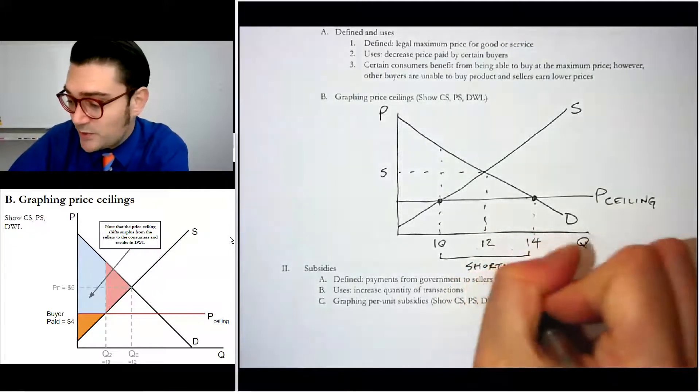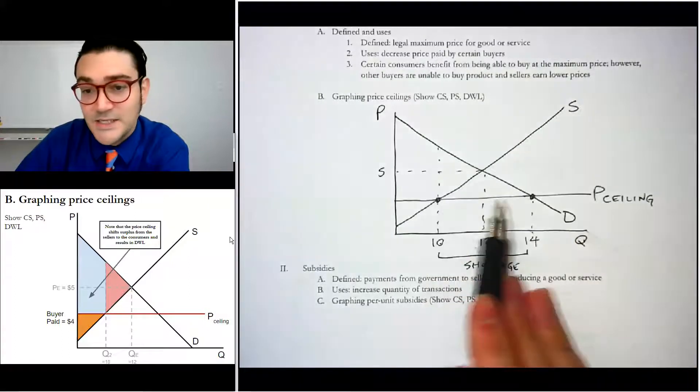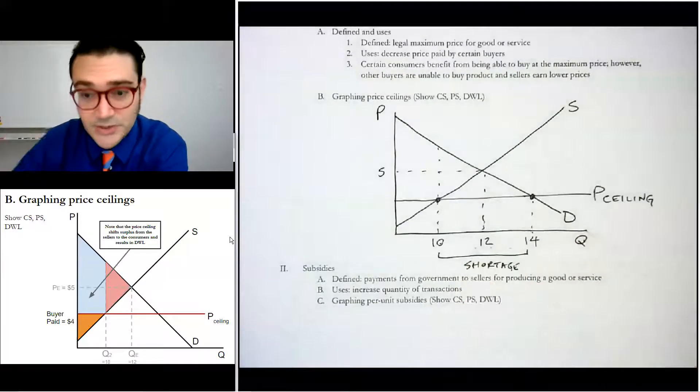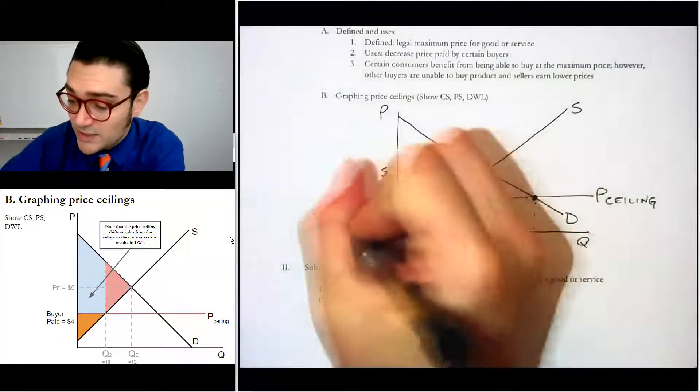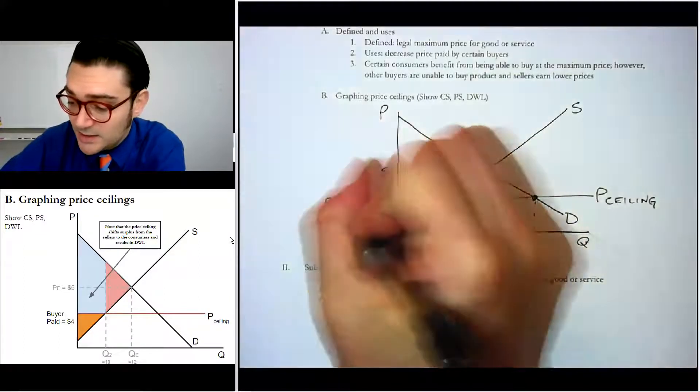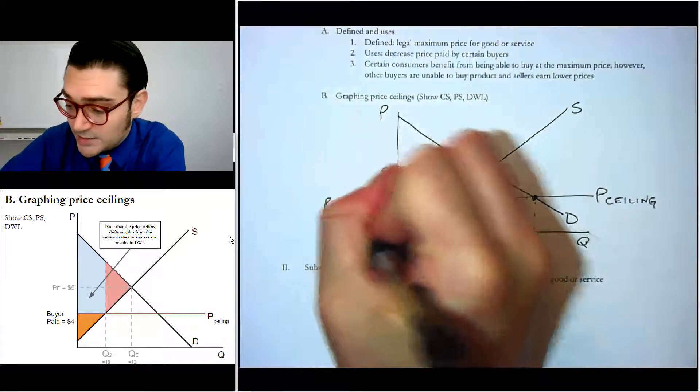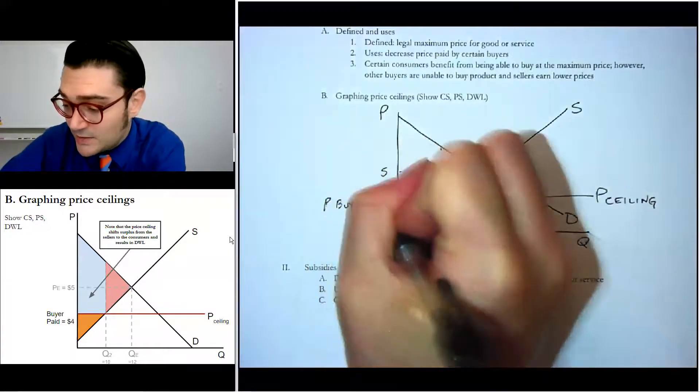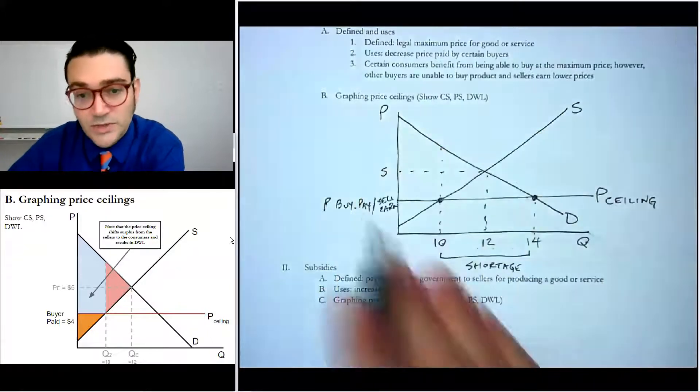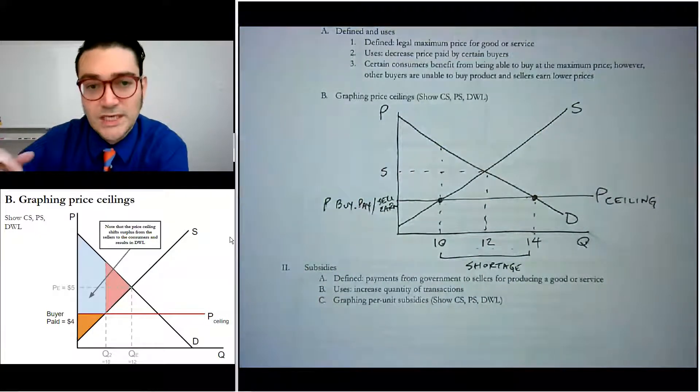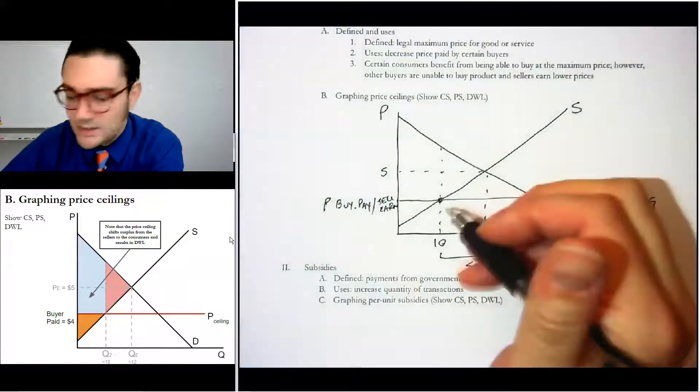But what some students have pointed out to me is that that's kind of like a ceiling in a house. So if that helps you, there you go. Now, for us, what we're going to notice is that with the price ceiling, this is the price that the buyers pay and that the sellers earn. So again, it's not driving a wedge between the two. It's just saying this is the maximum. And we said that's four.